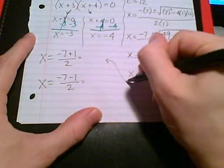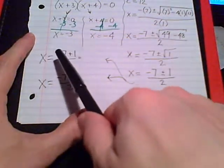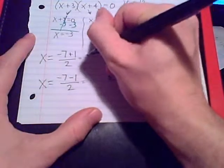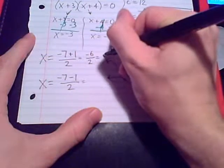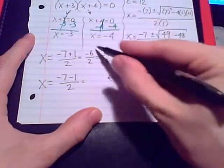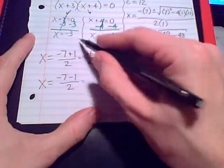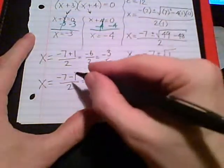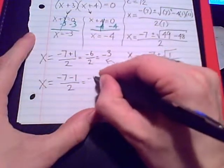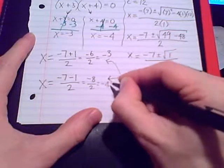Those are our two solutions. And just order of operations. So in the numerator, negative 7 plus 1 is negative 6 over 2, and that divides evenly to negative 3. Matching our answers from solve by factoring. Matches up with the answer from solve using quadratic formula. Over here, negative 7 minus 1, that's negative 8 over 2, equals negative 4.